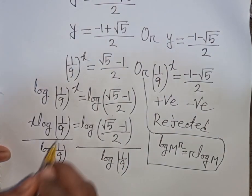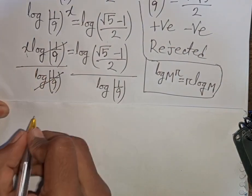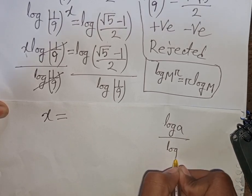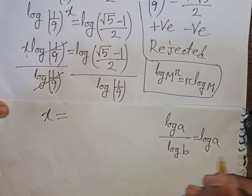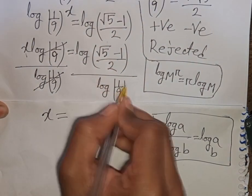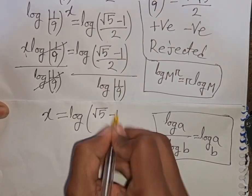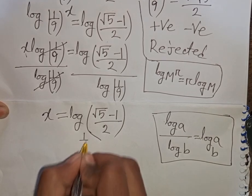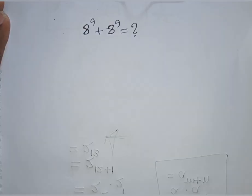Now we need the value of x, so we divide both sides by log(1/9). This log(1/9) cancels, and applying the formula log(a) divided by log(b) equals log base b of a, we get x equals log base (1/9) of ((square root of 5 minus 1) divided by 2). This is our final answer.